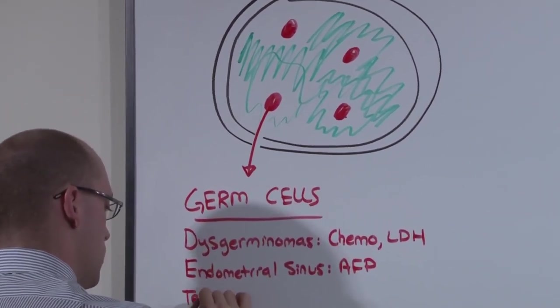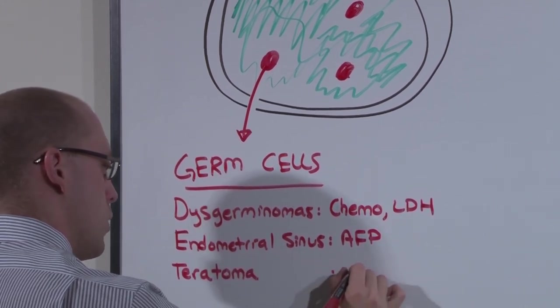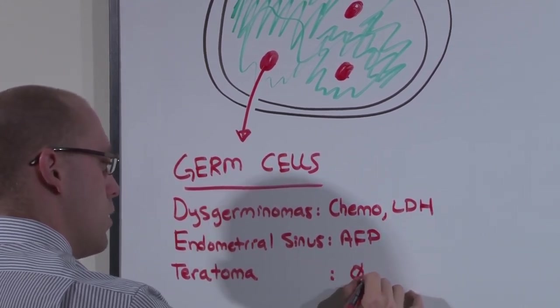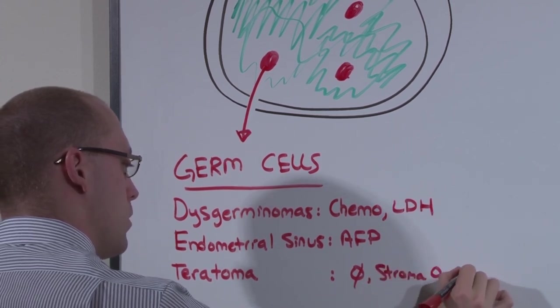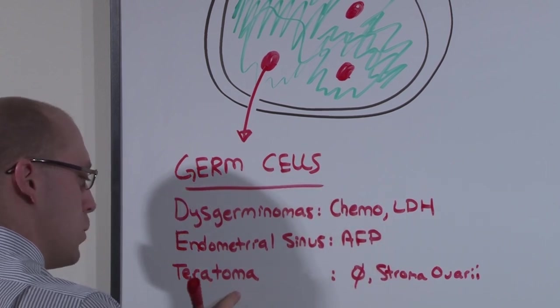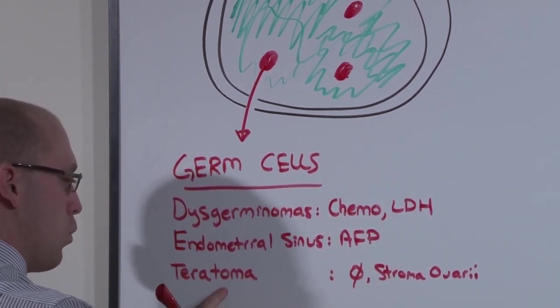The teratomas, the dermoid cysts, don't really have a cancer marker, but can cause torsion of the ovary. In girls, teratomas are usually not malignant, as opposed to in boys where they are.